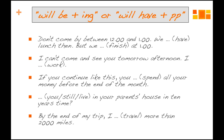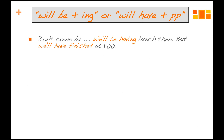And here we are back again. Your first sentence: 'Don't come by at 12 — we will be having lunch then.' Future continuous — we will be in the middle of having lunch. 'But we'll have finished at one o'clock.' Lunch finishes at, say, 12:50, so at one o'clock we'll have finished. Then you can stop by.